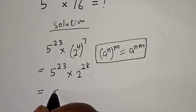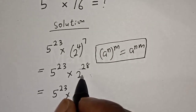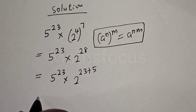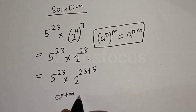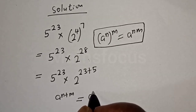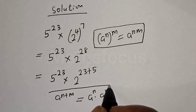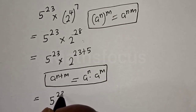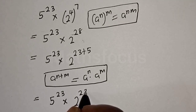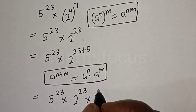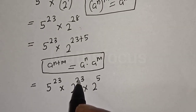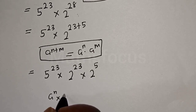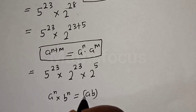This is equal to 5 raised to power 23 multiplied by 2 raised to power 23 plus 5. Using the rule that A raised to power N plus M equals A raised to power N multiplied by A raised to power M, we split 2 raised to power 28 into 2 raised to power 23 multiplied by 2 raised to power 5. Now we have the same power 23 on both 5 and 2, so using the rule A raised to power N multiplied by B raised to power N equals AB raised to power N.